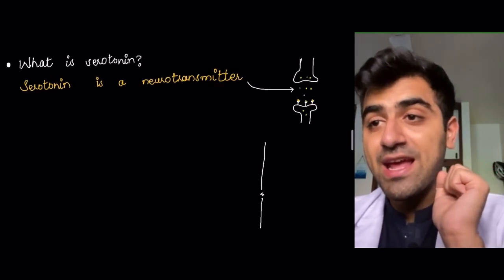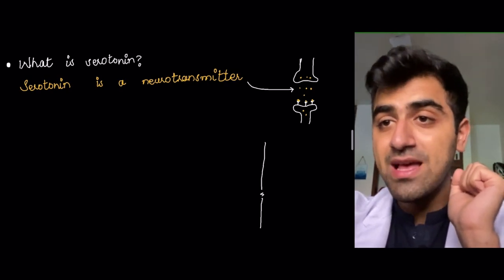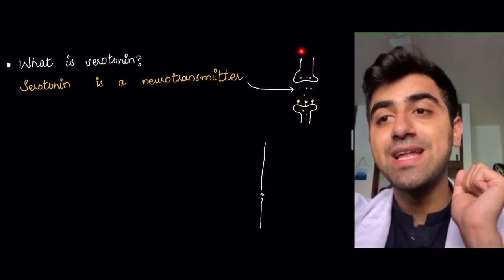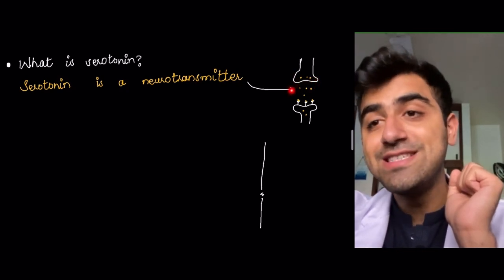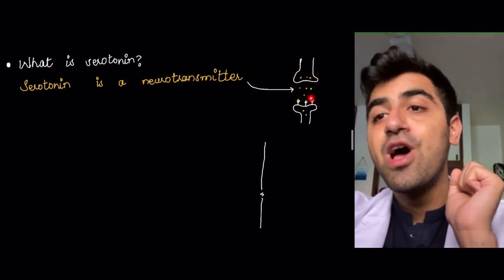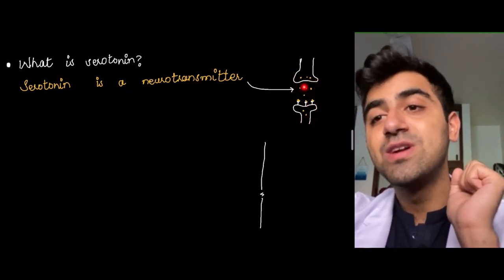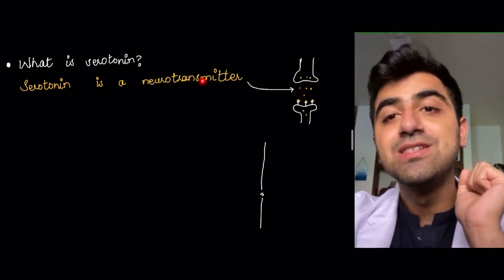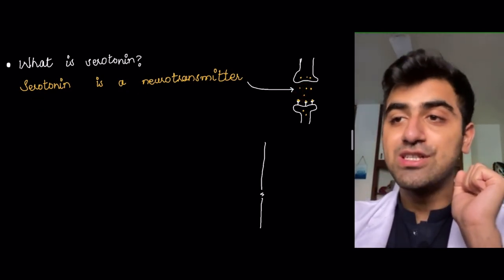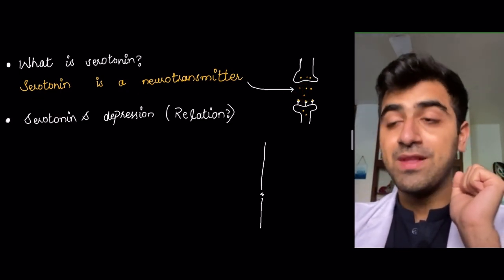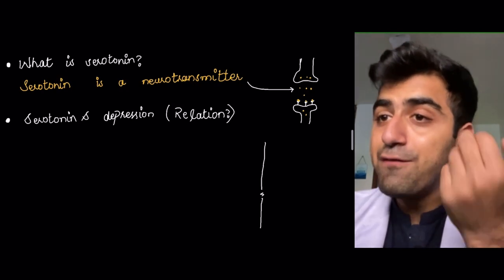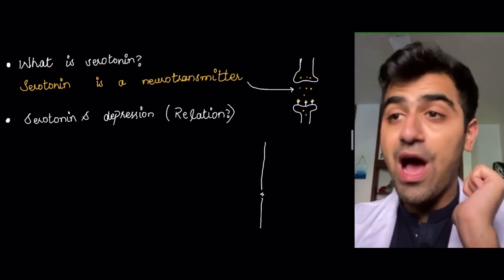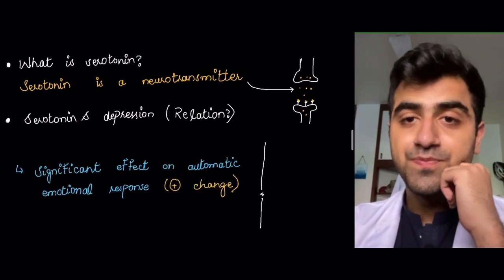What is serotonin? Serotonin is a neurotransmitter. It's released into the synaptic cleft. A synapse is a connection between two neurons in which the axon of one neuron releases particles onto the dendrite of another neuron. These particles are neurotransmitters.